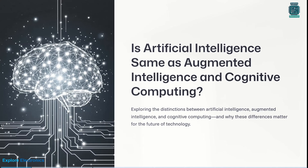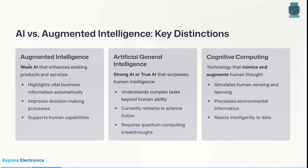Augmented intelligence is a weak AI. As we have seen in the previous discussion, weak AI is augmented intelligence — it will enhance existing products or services. We can use weak AI to highlight vital business information automatically, improve the decision-making process, or support human capabilities. That is what weak AI does, and it will be called augmented intelligence.